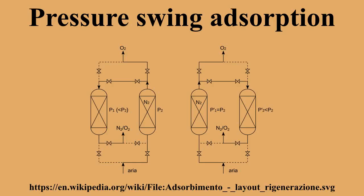It is then ready for another cycle of producing oxygen-enriched air. This is the process used in medical oxygen concentrators used by emphysema patients and others who require oxygen-enriched air to breathe. Using two adsorbent vessels allows near-continuous production of the target gas. It also permits a pressure equalization, where the gas leaving the vessel being depressurized is used to partially pressurize the second vessel.